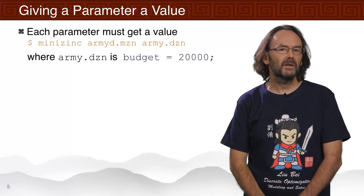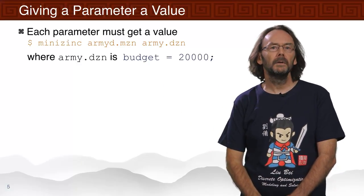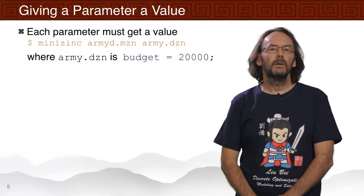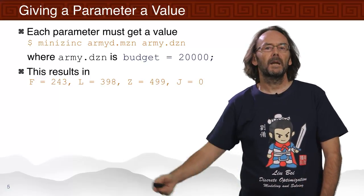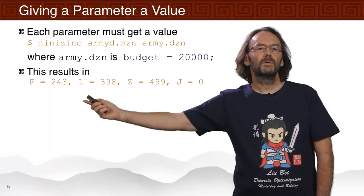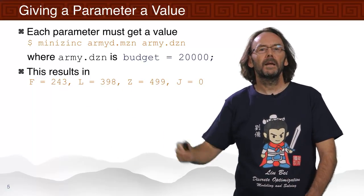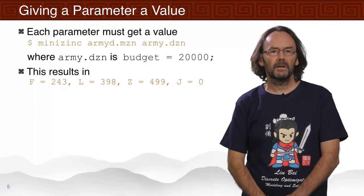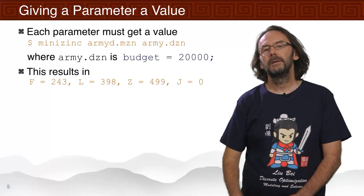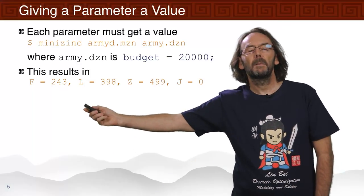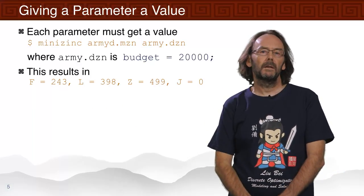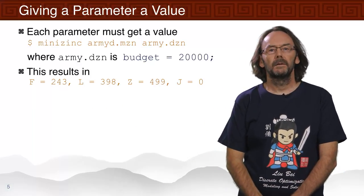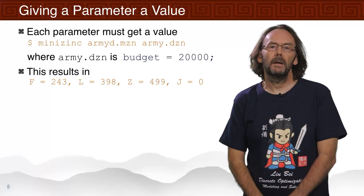Now that the parameter budget has a value, the model can be solved. We'll get a new solution saying: if we have that much money, then we can get this army, which would be the better army.